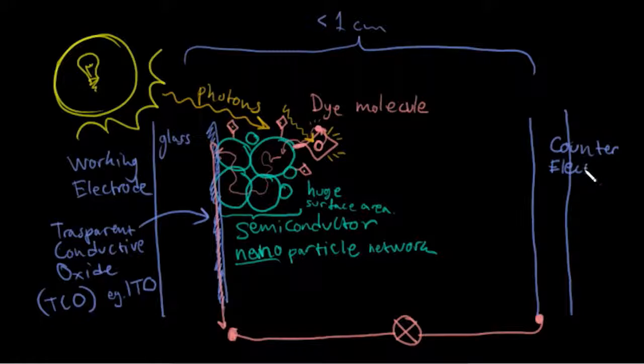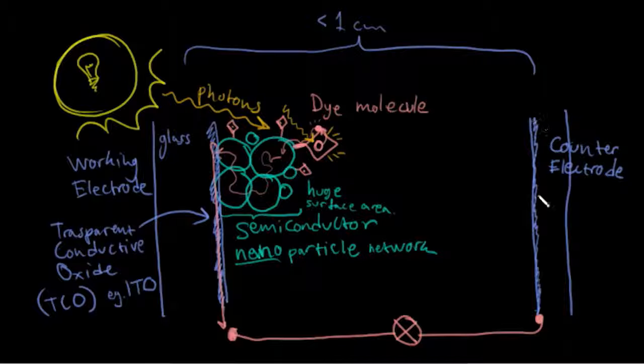So on the other side we have what's called the counter electrode. Which also has some kind of conducting layer. It doesn't necessarily need to be transparent because it's only on the working electrode side.